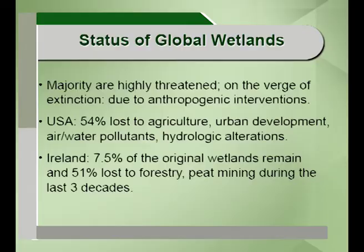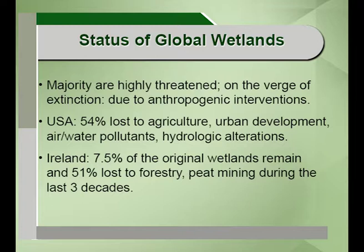The status of global wetlands shows that the majority are threatened and on the verge of extinction, mainly due to human-induced or anthropogenic interventions. In the United States of America, in the past few years, 54 percent of wetlands has been lost to agriculture, urban development, pollutants and hydrologic alterations. In Ireland, only 7.5 percent of wetlands remain today and 51 percent have been lost to forestry and peat mining during the last three decades.